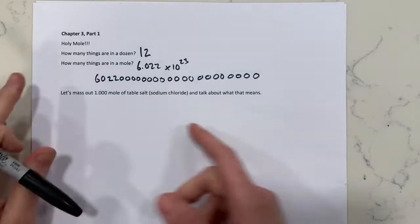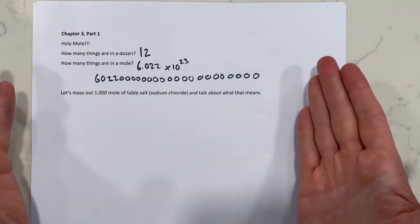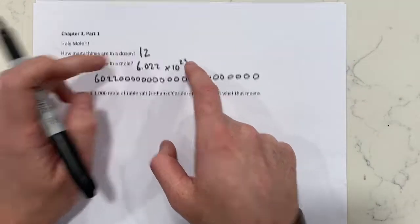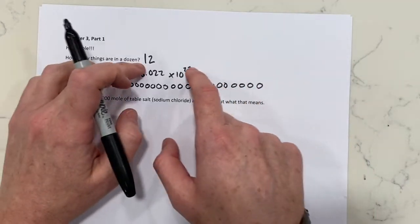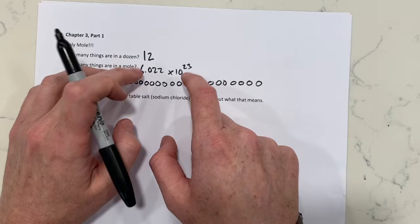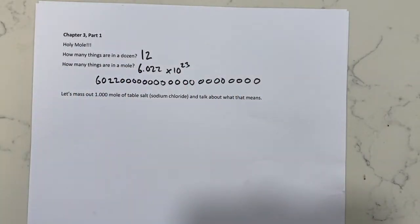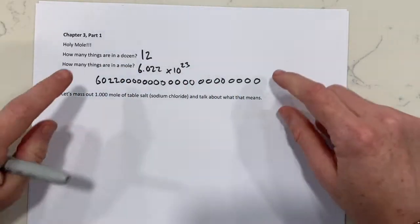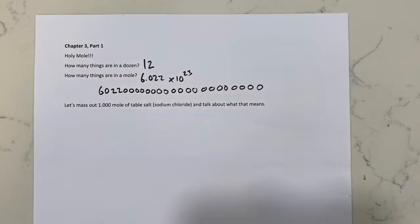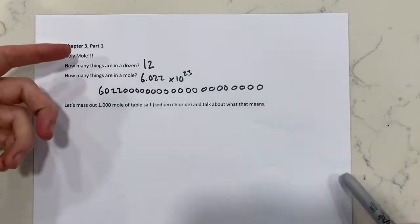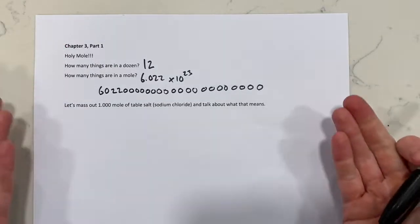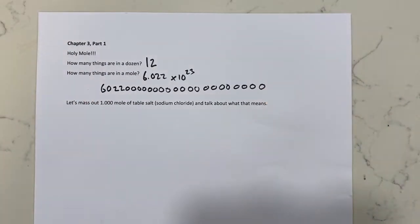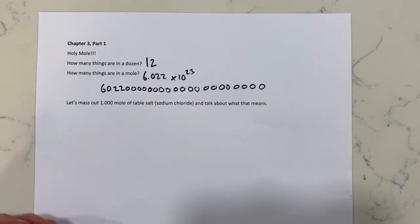I might have been off by a zero or so, but this ends up being a very large number. Scientific notation is actually pretty important because this would be really annoying to write. Instead of twelve, it's just a number — there's this many things in a mole. Pretty big. But atoms are very, very small, so we need a tangible size to represent them.